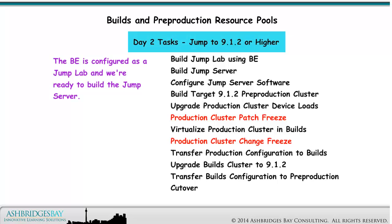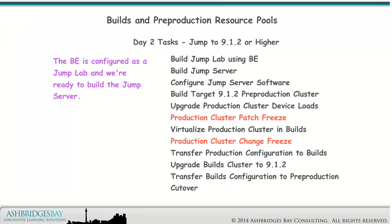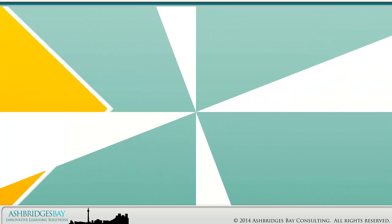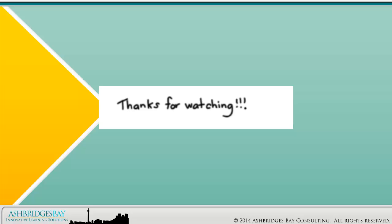Here are the tasks for a Jump to 9.1.2 virtualization and upgrade. The BE is configured as a Jump Lab and we're ready to build the Jump Server. Coming up next: Day 2, Jump to 9.1.2 or higher — Build Jump Lab Server. Thanks for watching!